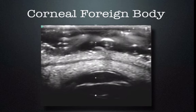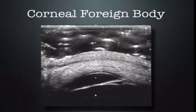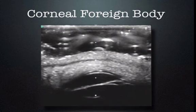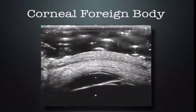Here we have a corneal foreign body. We can see the lid very well, the tarsal plate — the hypoechoic line going across the eyelid — the rest of the eyelid, and then the anterior chamber. When we look at the anterior chamber, we can see a hyperechoic structure moving back and forth. In this case, it is a metal foreign body in the cornea that did not penetrate the globe itself.